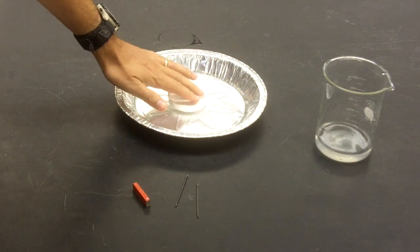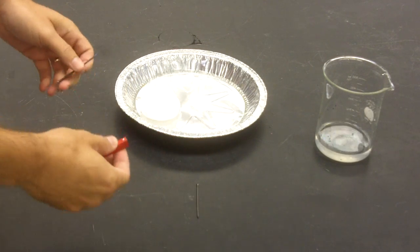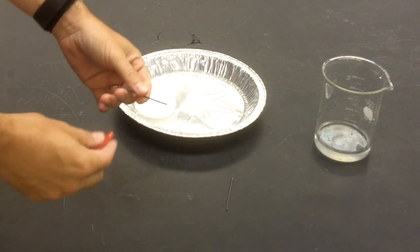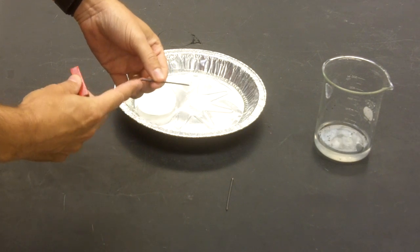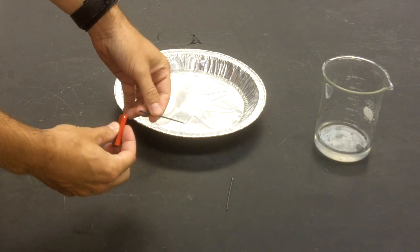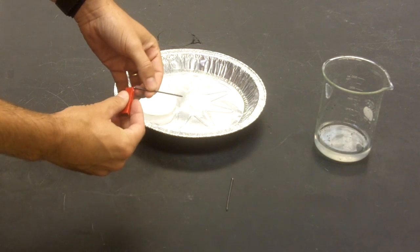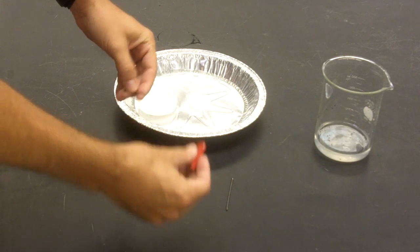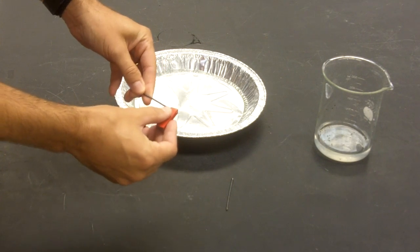Now I'm going to take the magnet—you could do this as a demo or students could do this as an activity—and I'm going to rub this with the north end from the head to the tip, just like this, three times. One, two, three.